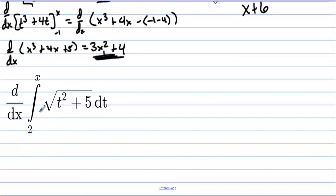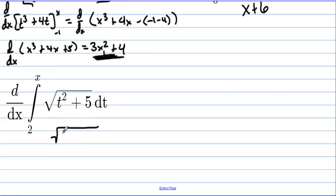If we have the derivative from 2 to x of the square root of t squared plus 5, the derivative of the integral — they undo each other. But when we would do the process for the integral, we would plug x in for t. So the answer is just the square root of x squared plus 5. That's it.